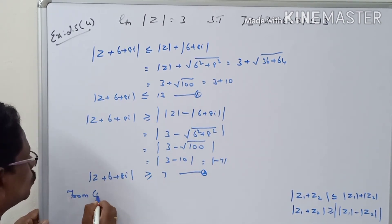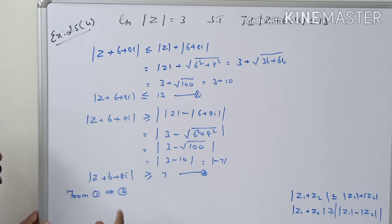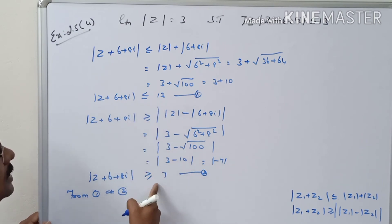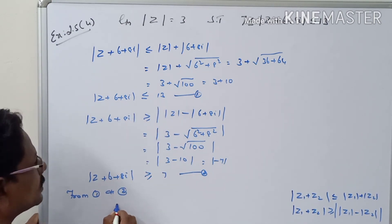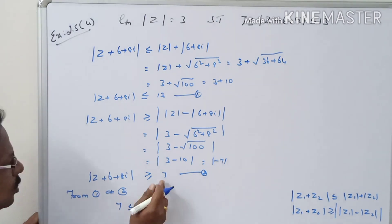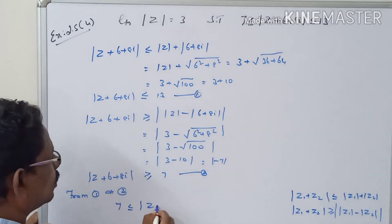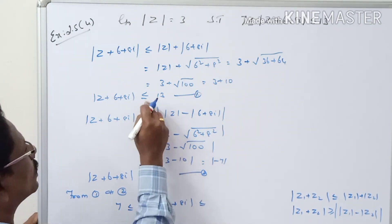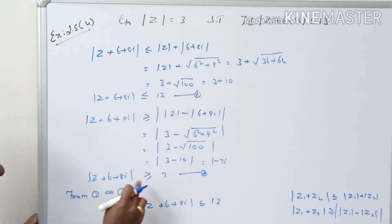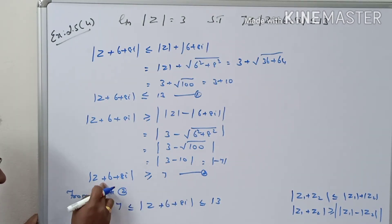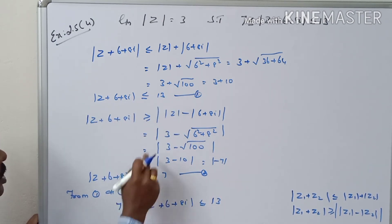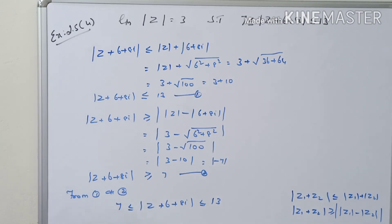So from 1 and 2, 7 is less than this one and 13 is less than this one. So from 1 and 2, 7 ≤ |z + 6 + 8i| ≤ 13.